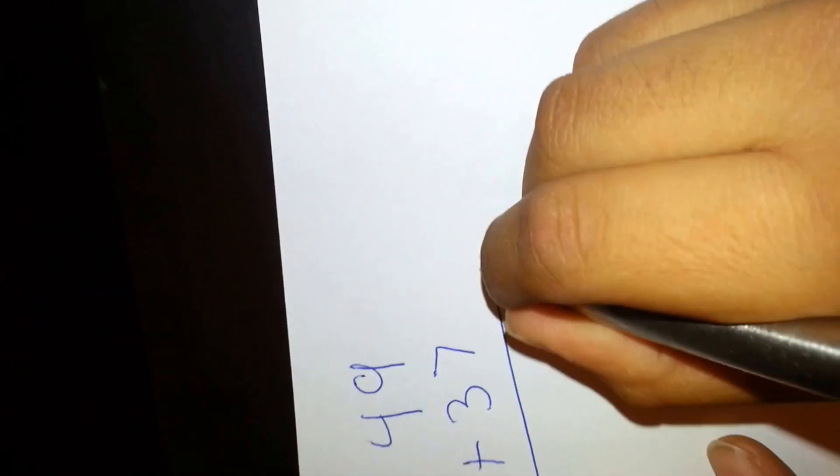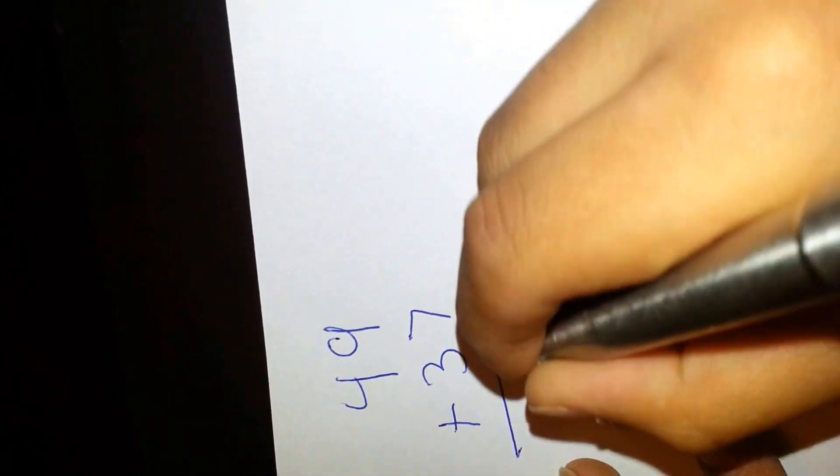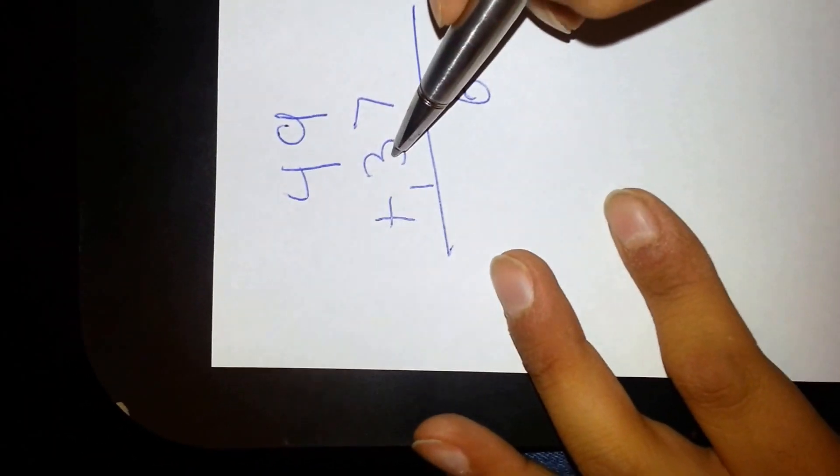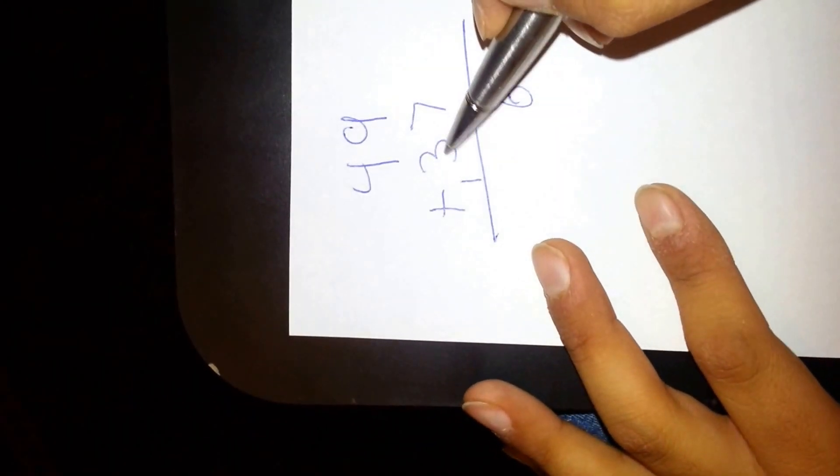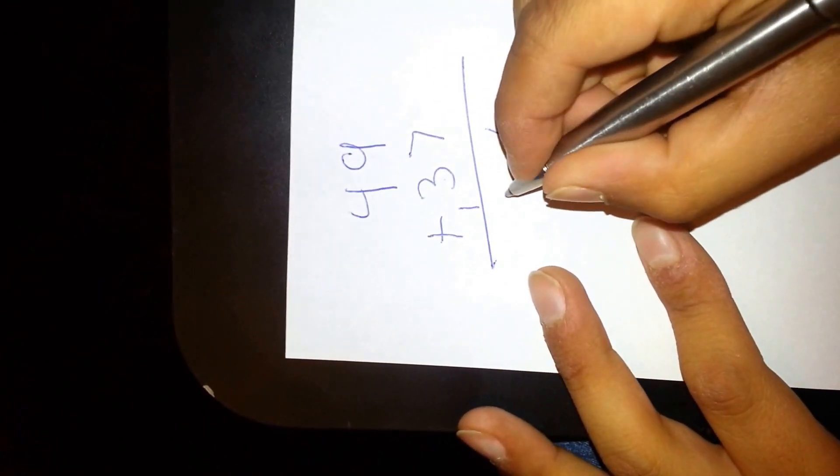For example, 49 plus 37. 9 plus 7 is 16, so you put the 6 down and carry over the 1. Now 4 plus 3 is 7, plus 1 (don't forget the 1) is 8. So you put down the 8. Your answer is 86.